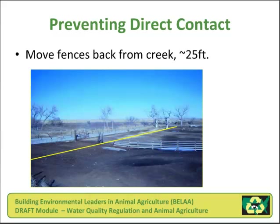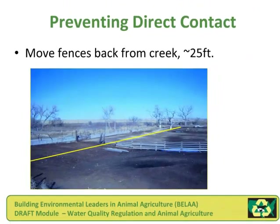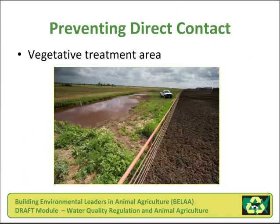Preventing direct contact. The image below shows how you can retrofit an existing cattle lot to protect water quality — the yellow line represents where a new fence could be placed, allowing the area between the fence and the water body to be replanted with healthy grass and serve as a filter area. Another image shows a vegetated treatment area where stormwater drains from the cattle lot into a shallow settling basin, then discharges at several points across an engineered and specially planted vegetative treatment area.